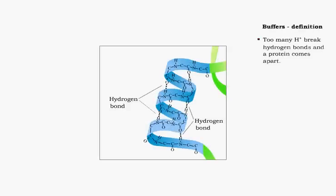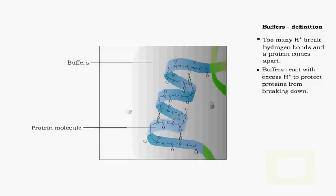Recall that too many hydrogen ions will break down the structure of proteins by breaking hydrogen bonds. The body uses buffer systems to react with excess hydrogen ions. This protects the proteins from breaking down.